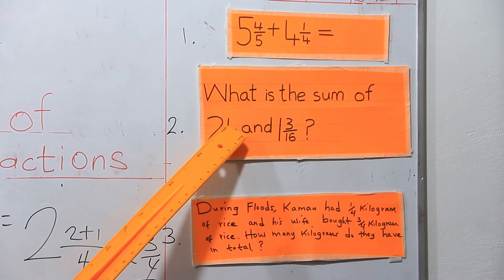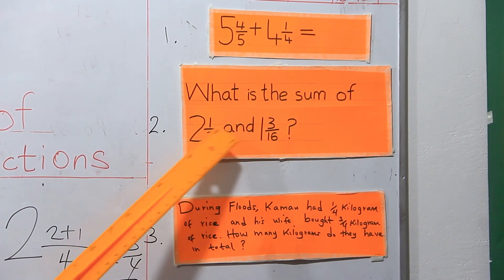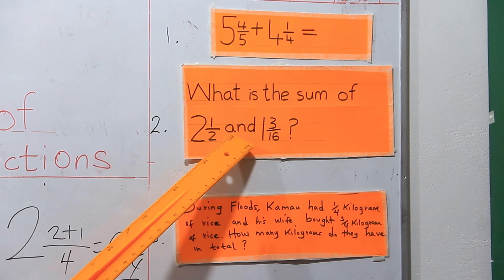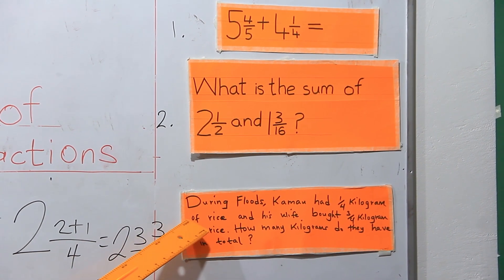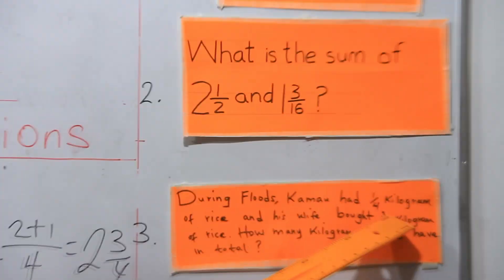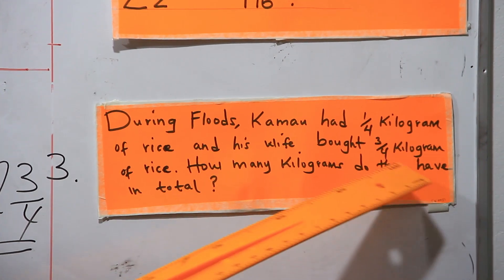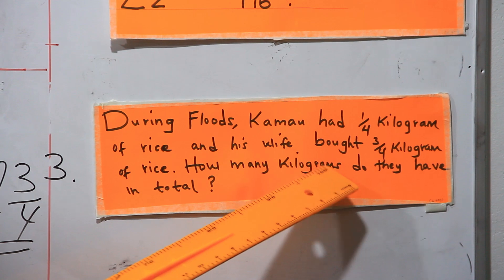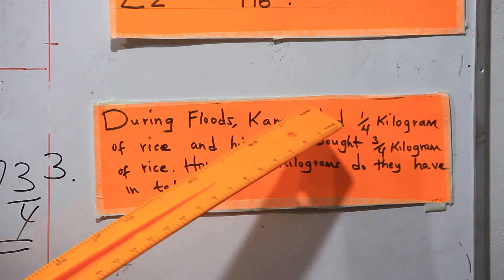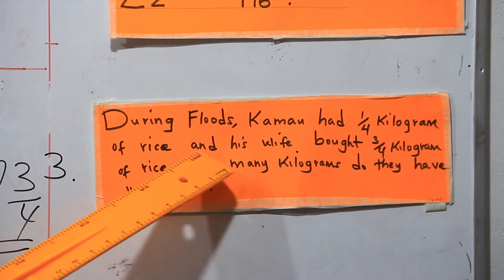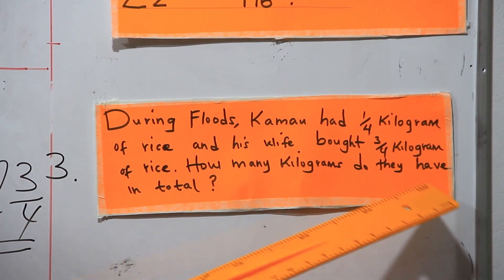The second question: what is the sum of two and a half and one and three-sixteenths? The last question: during floods, Kamau had a quarter kilogram of rice and his wife bought three-quarter kilograms of rice. How many kilograms do they have in total?